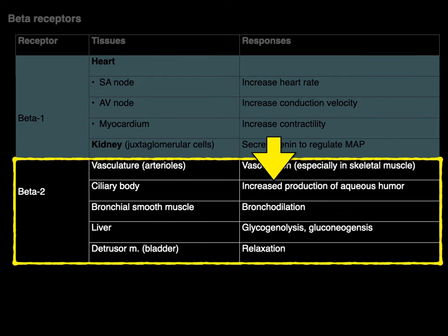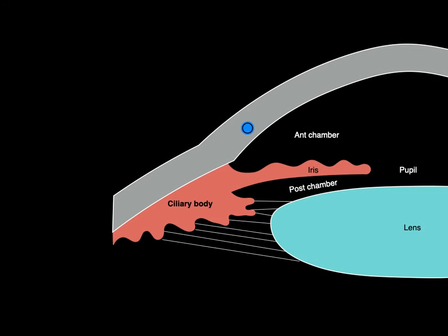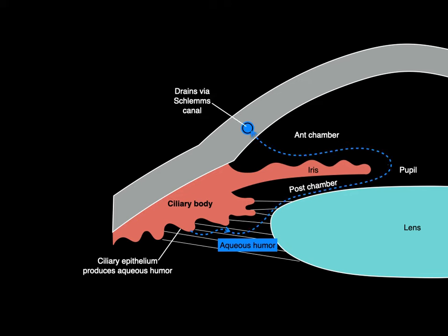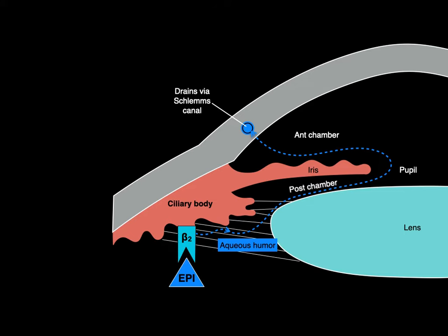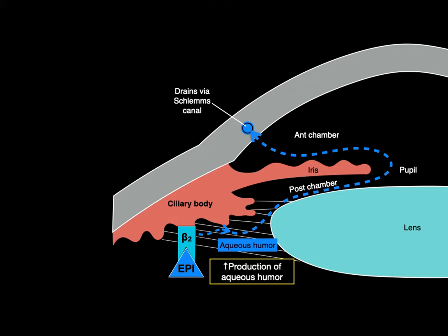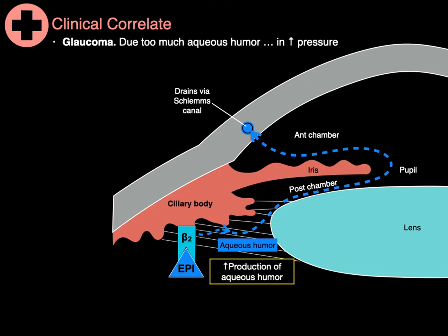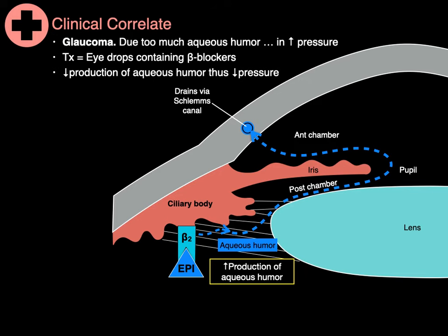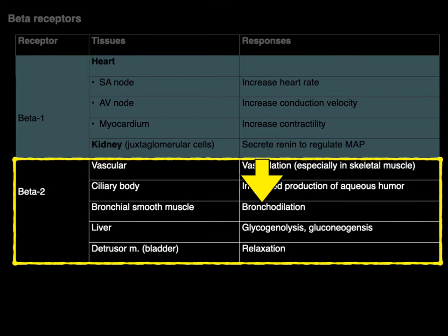Let's talk about the ciliary body — stimulating beta-2 receptors causes an increase of aqueous humor. Here is the ciliary body, on the outside of which is ciliary epithelium that produces aqueous humor. That aqueous humor flows from the posterior chamber, through the pupil, into the anterior chamber, and is drained via the canal of Schlemm. The beta-2 receptors on the ciliary epithelium are stimulated by epinephrine, resulting in increased production of aqueous humor. A clinical correlate is glaucoma, due to too much aqueous humor causing too much pressure, which can result in blindness. A treatment is eye drops containing beta blockers, which block beta-2 adrenergic receptors and decrease production of aqueous humor, thus decreasing pressure.